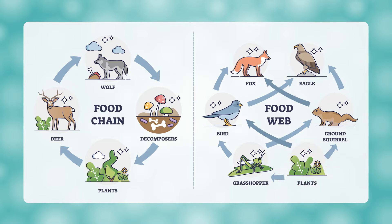The plants may be eaten by the grasshoppers, birds, or squirrels. The bird might also eat the grasshopper in addition to eating the plants. Food webs attempt to show all of the possible ways that energy can transfer in an ecosystem, while food chains show a single path inside a food web.